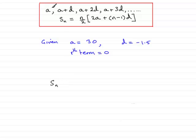What you've got to remember is that if you have an arithmetic sequence a, a plus d, a plus 2d, and so on, the sum Sn of the first n terms is given by this formula: n over 2 multiplied by twice the first term plus n minus 1 times the common difference d.